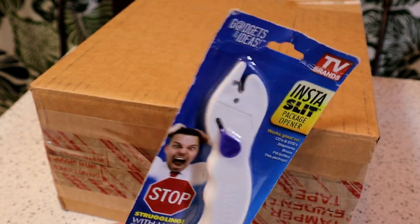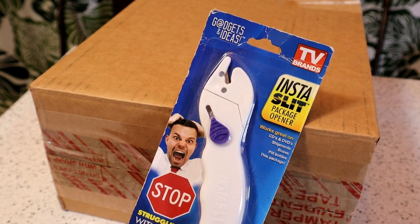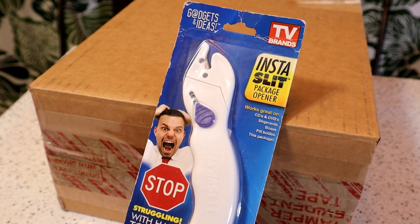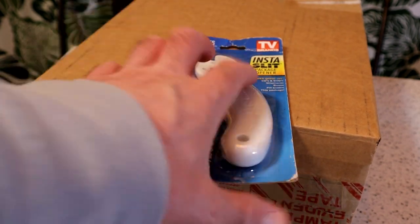This is called the Insta Slit Package Opener. Works great on - you'll know it's retro now - works great on CDs and DVDs, shipments, boxes, pill bottles, this package. Stop struggling with hard to open plastic packaging.